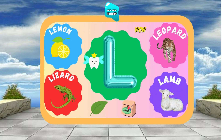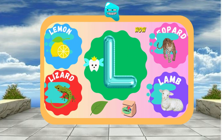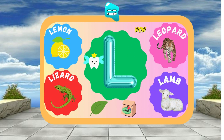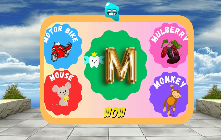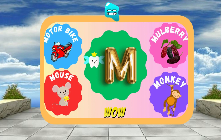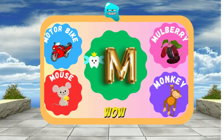L is for Leaf — L, l, Leaf. L is for Lunch — L, l, Lunch. M is for Monkey — M, m, Monkey. M is for Mouse — M, m, Mouse.